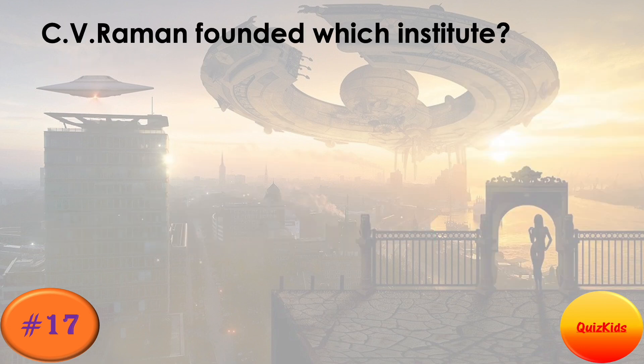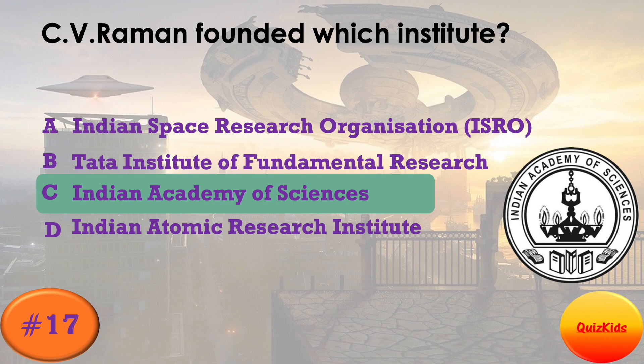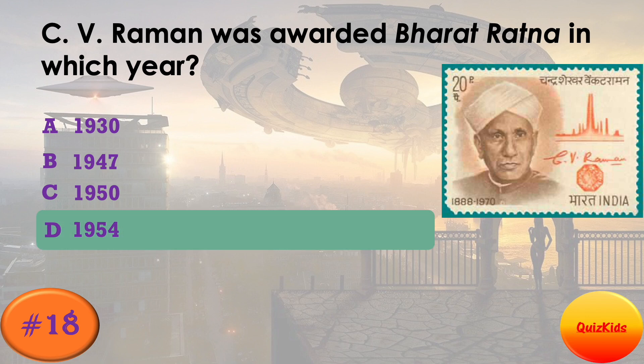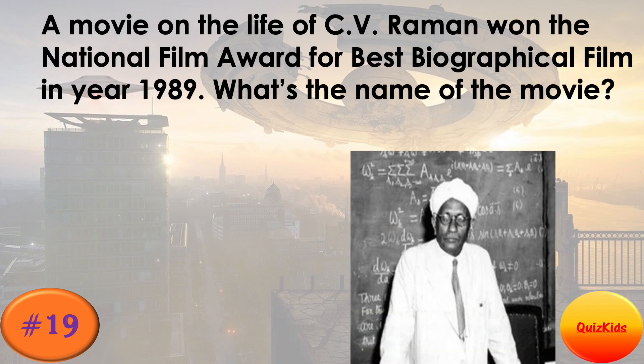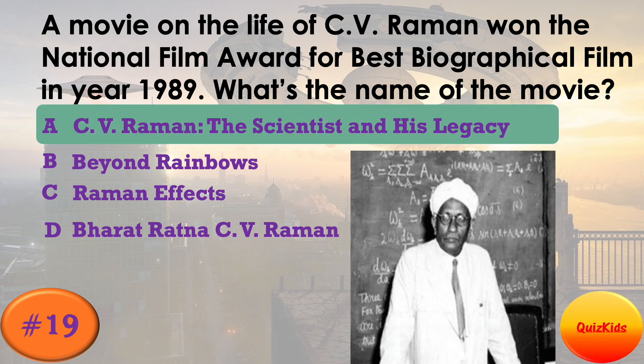Which institute did C.V. Raman found? The right answer is Option C — Indian Academy of Sciences. C.V. Raman was awarded the Bharat Ratna in which year? The right answer is Option D — 1954. A movie on the life of C.V. Raman won the National Film Award for Best Biographical Film in the year 1989. What is the name of the movie? The right answer is Option A — C.V. Raman: The Scientist and His Legacy.